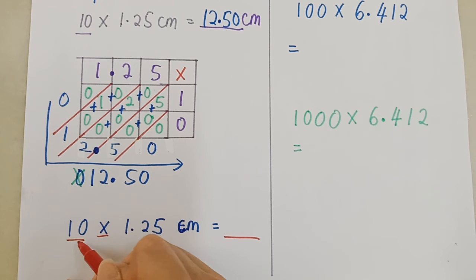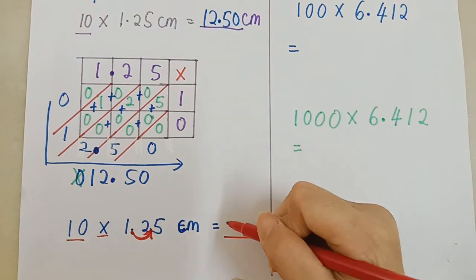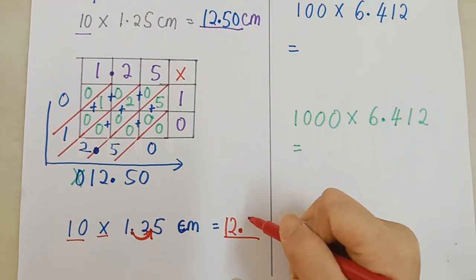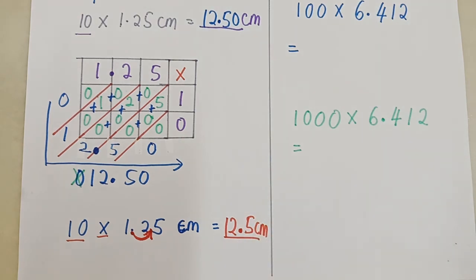Times 10. Kita gerak 1 step. Letakkan pensel kamu di tempat titik perpuluhan. Lepas tu, times 10. Kita gerak 1 langkah ke kanan. Move 1 step to the right side. So sekarang titik perpuluhan sudah berubah ke sini. So jawapannya 12 point ada di sini, 5 C M. Nampak?